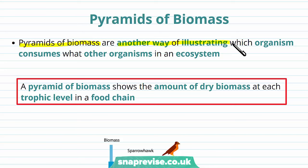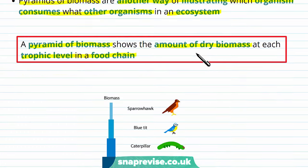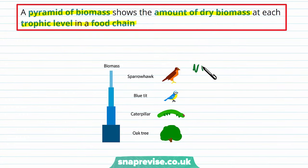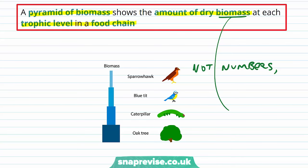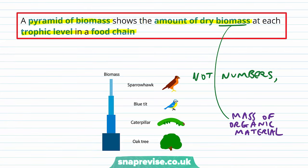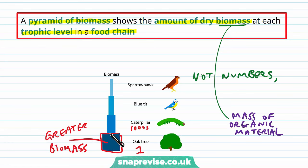Pyramids of biomass are a different way of illustrating which organism consumes what other organisms in an ecosystem. A pyramid of biomass shows the amount of dry biomass at each trophic level in a food chain. So instead of just looking at numbers, we're looking at biomass — the mass of organic material in a particular group of organisms. This is better because even though we may have one oak tree and thousands of caterpillars, the oak tree has a far greater biomass than the caterpillars overall, more accurately showing that biomass is consumed at each level and there's less and less as we go along.